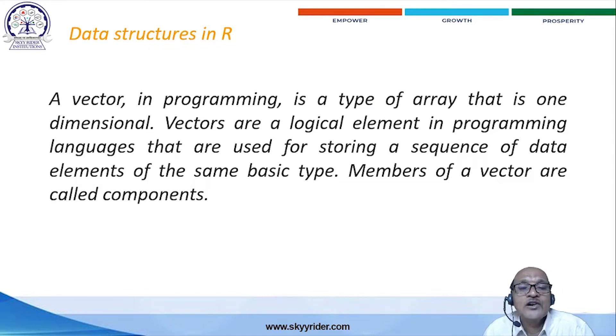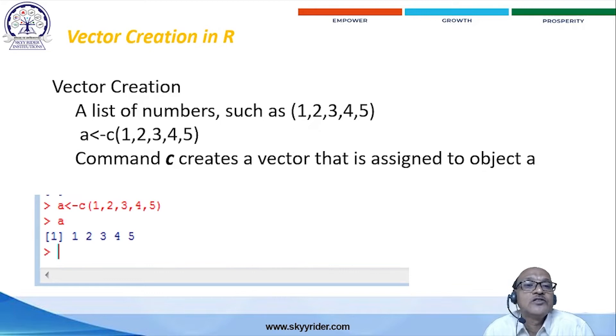Vector - how to create the vector in R programming? The vector of A is a list of numbers such as 1, 2, 3, 4, 5. While at the time of typing in R programming, like this: A is equal to C of 1, 2, 3, 4, 5 in typing in R editor. The C is indicating the command to create a vector.